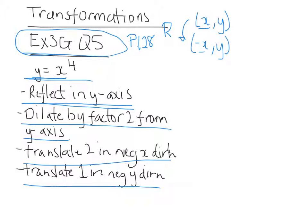Now the next thing we had to do was dilate by a factor of 2 from the y axis, which means the x value will be twice as big, so that'll be 2 lots of x values.